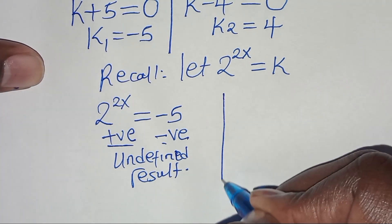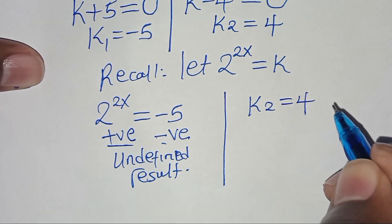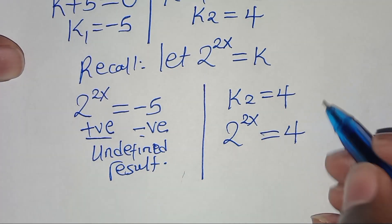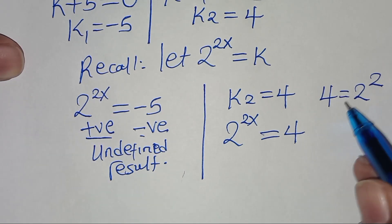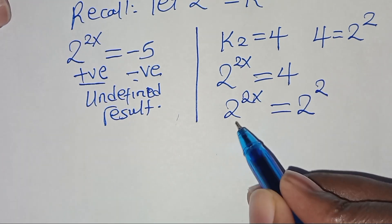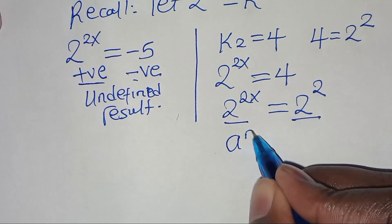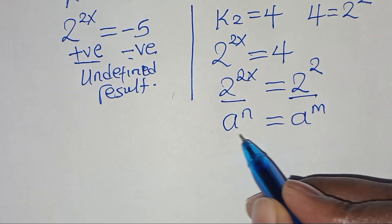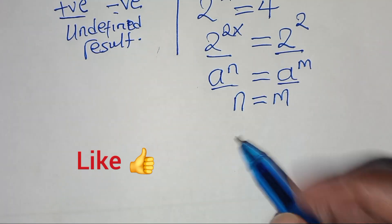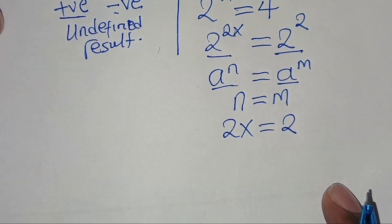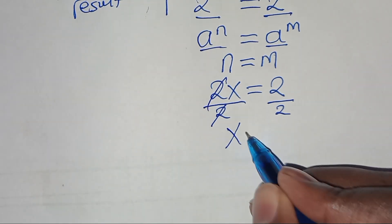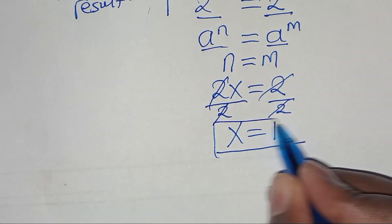From the second part, k equals 4, and given that 2 to the power of 2x equals 4, we can express 4 as 2 to the power of 2. Substituting, we have 2 to the power of 2x equals 2 to the power of 2. Since the bases are equal, the exponents must be equal, so 2x equals 2. Dividing both sides by 2, the value of x is equal to 1.